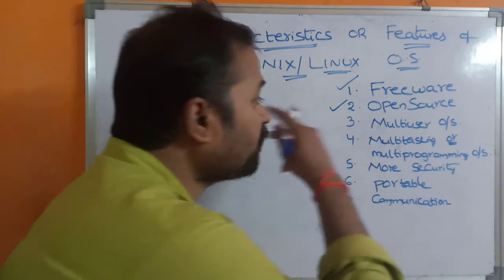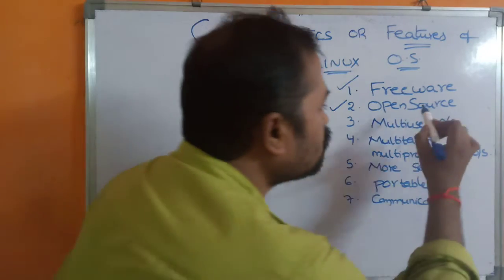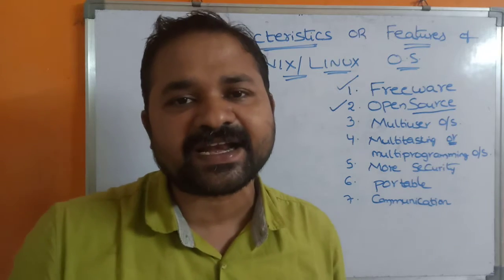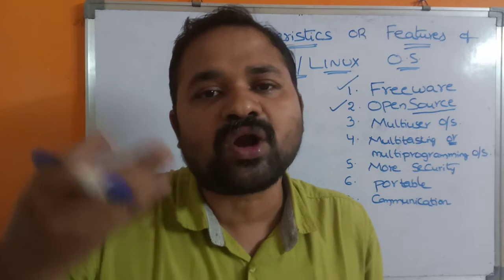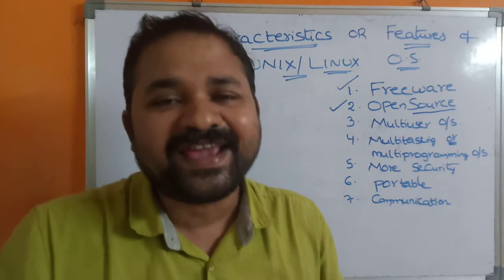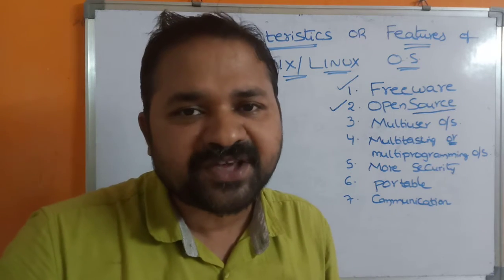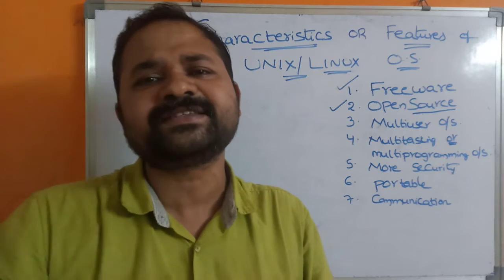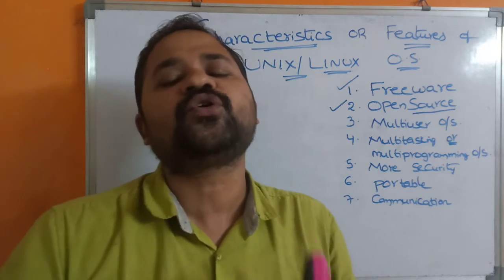The second feature is open source. Open source means the source code is openly available on the internet. Anybody can access the Unix or Linux source code, so we can do our own modifications, enhance the operating system, and develop a new version of our own Unix or Linux operating system.